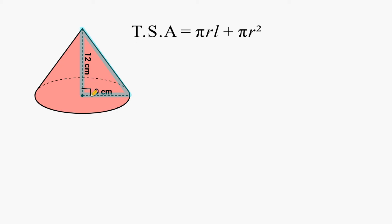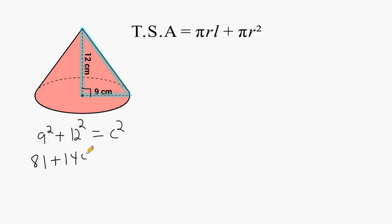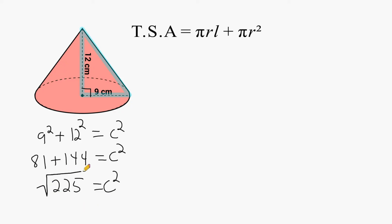The two lengths that form the right angle are the legs of the right triangle. We square them and add those squares together — that equals C squared, which is the hypotenuse, or the slant height. So 9 squared is 81, 12 squared is 144, and 81 plus 144 equals 225. Taking the square root of 225 gives us 15, so the slant height of our cone is 15 centimeters.